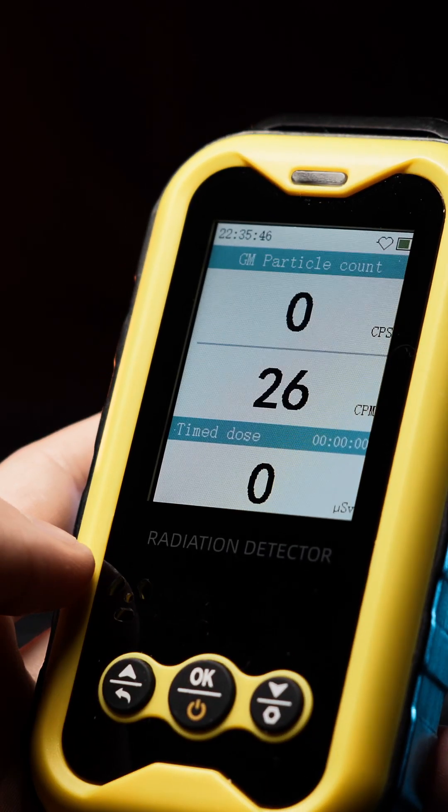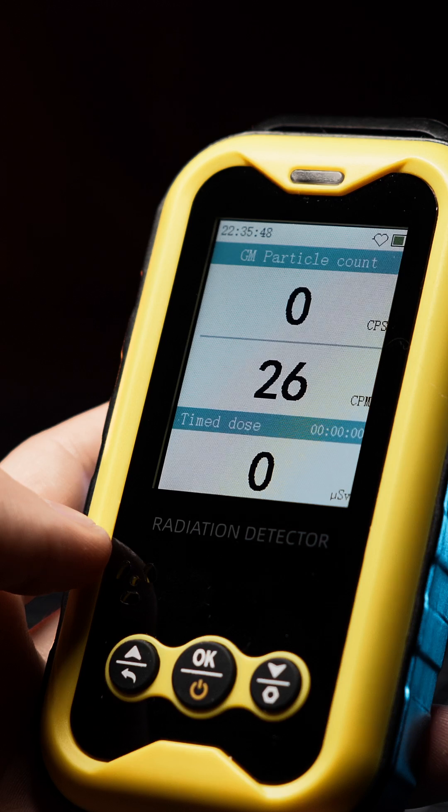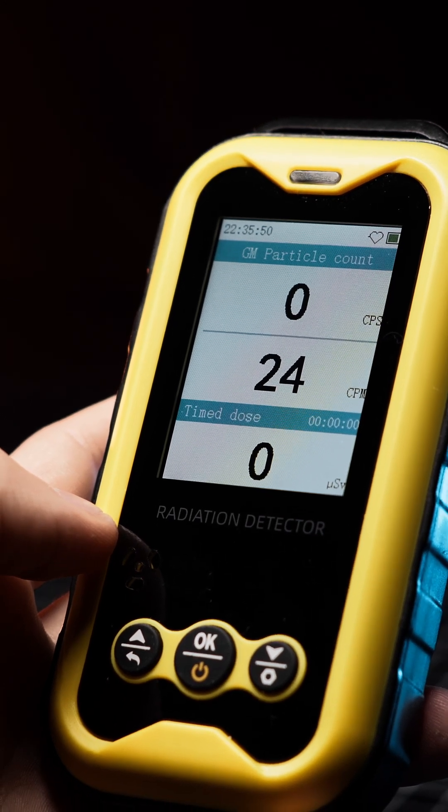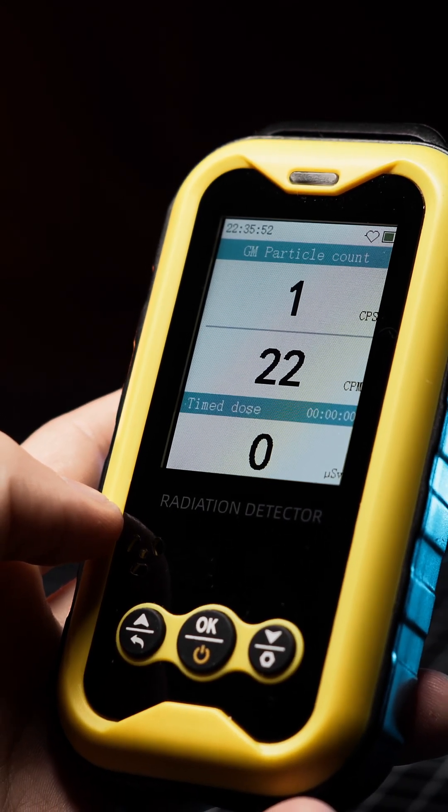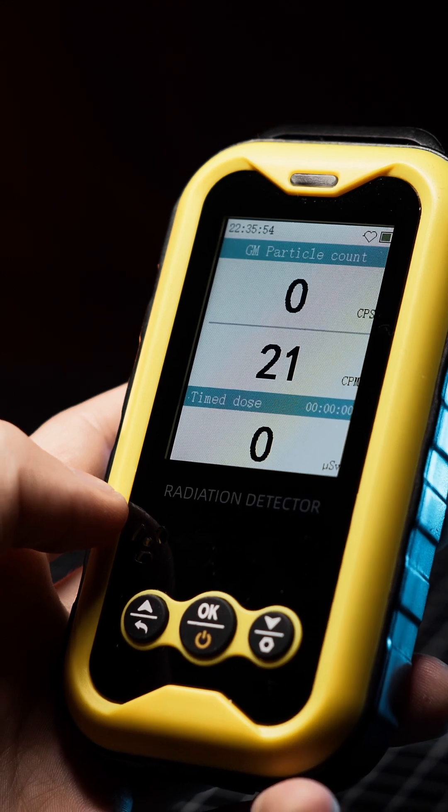Luckily there is a counts per minute and even counts per second mode, but with low sensitivity of the J321 tube, I think the counts per second is really unnecessary, and I will just stick to using counts per minute.